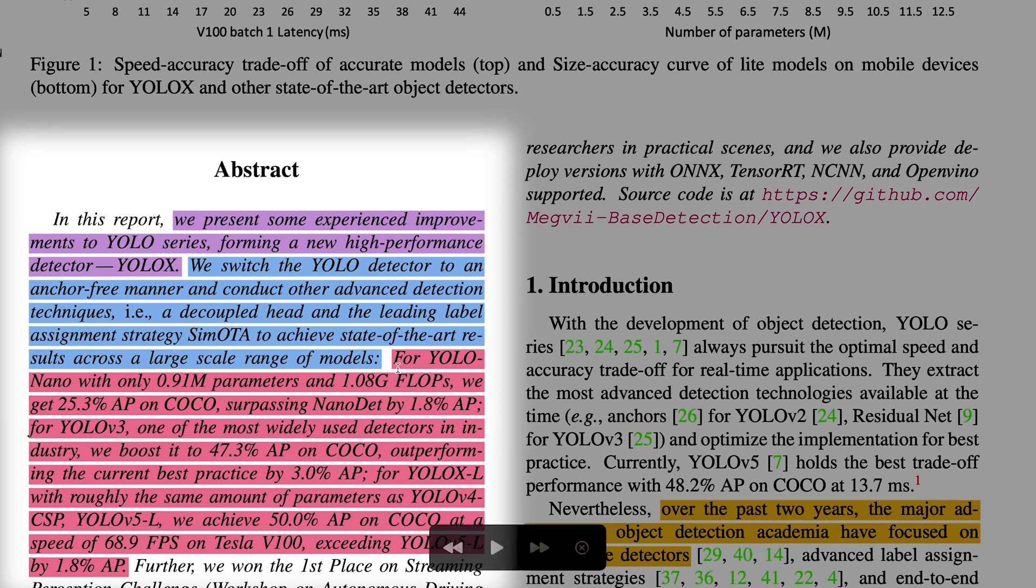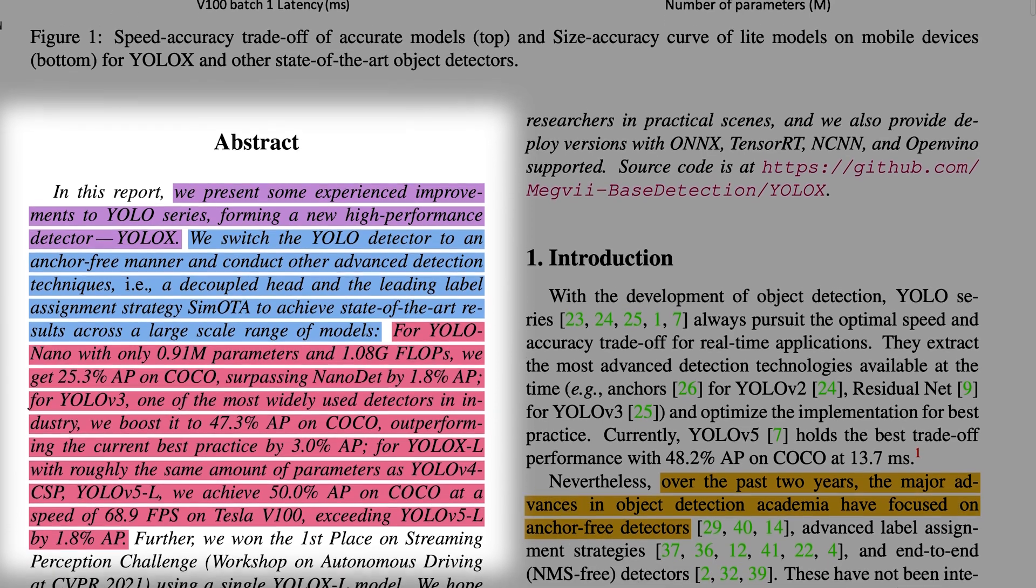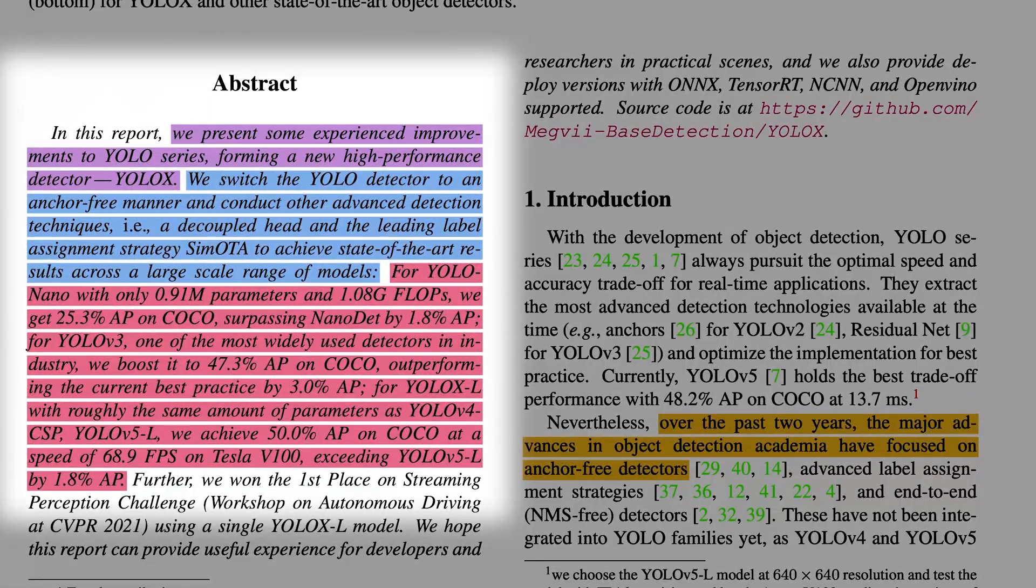Now here they are explaining the improved results they got with YOLOX. So for YOLOX nano with only 0.91 million parameters and 1.08 gigaflops, they were able to hit 25.3% average precision. And for YOLO V3, one of the most widely used detectors in the industry, YOLOX surpasses it by 3.0% average precision, which is a great improvement.